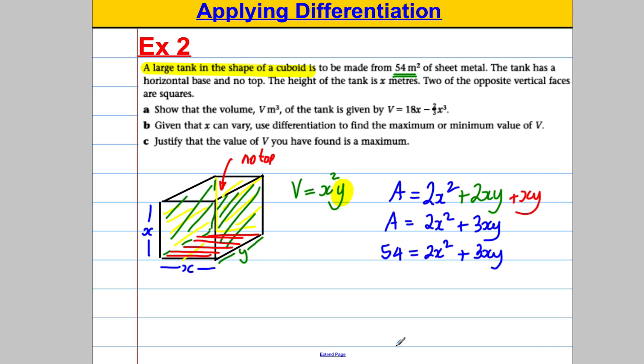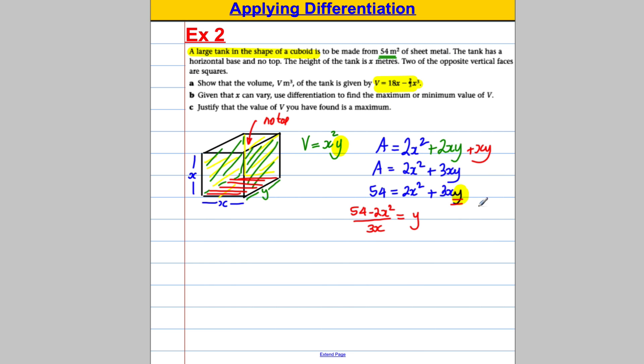Now, at this point, just take a second to see if you can think what to do. Well, I could eliminate y here, couldn't I? I could make y the subject and whatever I get for y the subject, I could put it in here and I'm going to get this formula, I'm sure. So let's try and do that here. I'm going to make y the subject. And if I do that, I'm subtracting 2x squared and I'm dividing by 3x. Hopefully, you can see that 54 subtract 2x squared divided by 3x is going to just leave y on its own on this side. So I'm going to call that equation 3. I'm going to call that equation 1 and I'm going to call that equation 2. And I'm going to say sub 3 into 1.